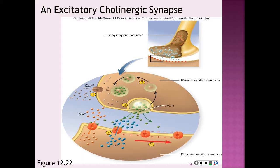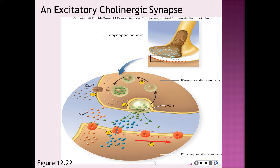Acetylcholine diffuses across the cleft and binds to ligand-regulated gates, which open to allow sodium to enter the cell and potassium to leave. Sodium spreads along the inside of the membrane, producing a local potential called the postsynaptic potential. If it's strong and persistent enough, this triggers an action potential.